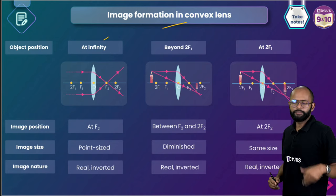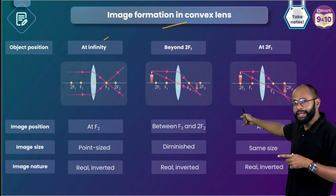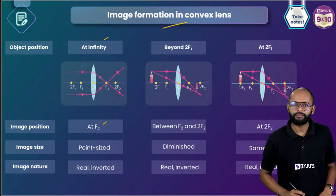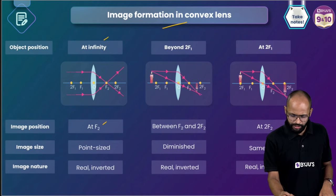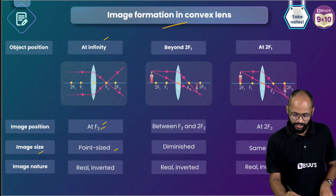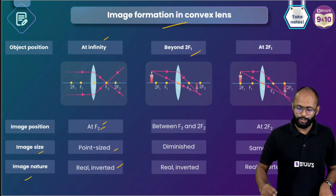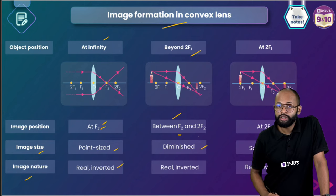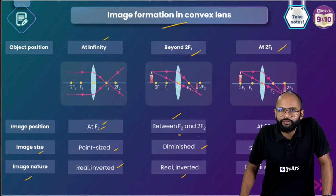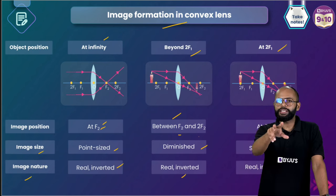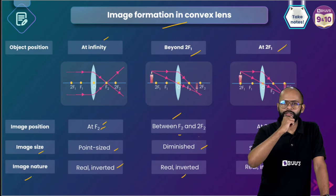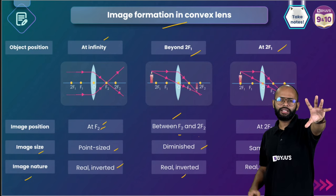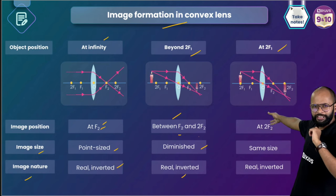First case: object at infinity. For a convex lens, image will be at focus on the other side. Image size is point-sized, nature is real and inverted. Object beyond 2F1: image is between F2 and 2F2, diminished and real. Object at 2F1 — which is the center of curvature equivalent — image is at 2F2, same size, real and inverted. Notice the pattern: just like a concave mirror, only the image goes to the other side.